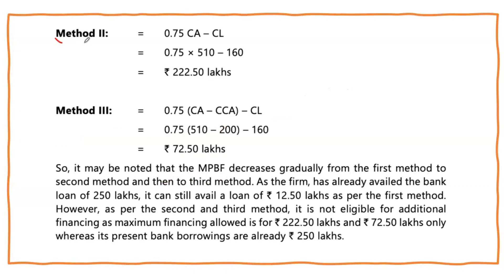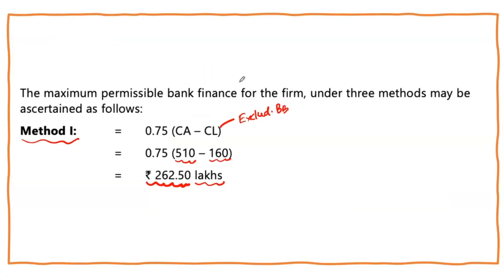Now let's move on to Method 2 using the same numbers. Method 2 says only 75% of the current assets should be considered, and that should be compared with the current liabilities to arrive at the eligible bank finance. So 510 into 75% equals 382.50, and that is compared with the current liability of 160.